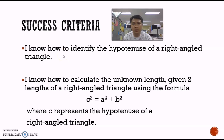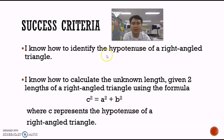To be able to apply Pythagoras' Theorem successfully, you need to know some of the basics of a right angle triangle. First, we need to be able to identify what is the hypotenuse of a right angle triangle. You will also need to know how to apply the formula C squared equals A squared plus B squared, and use this to find the unknown lengths when you are given two other lengths in the triangle.